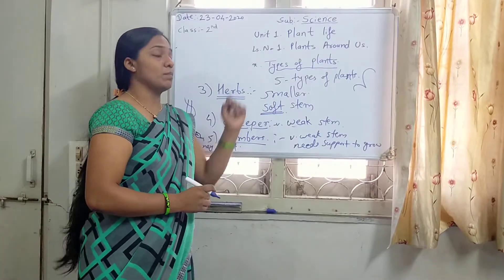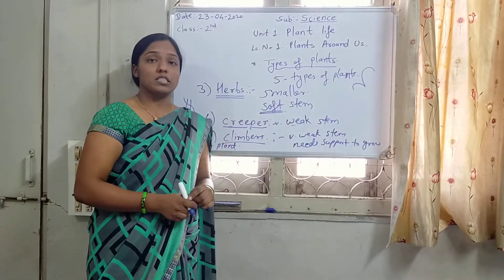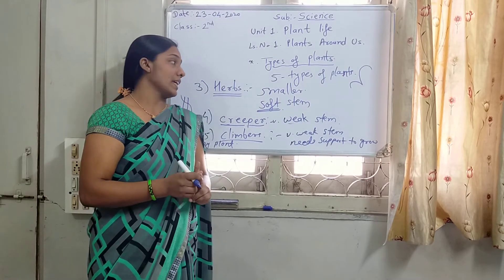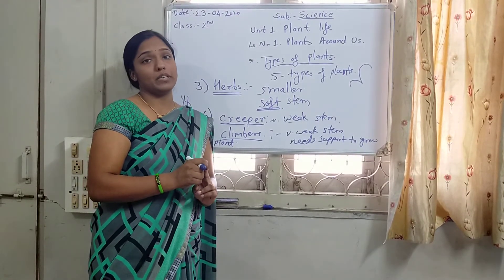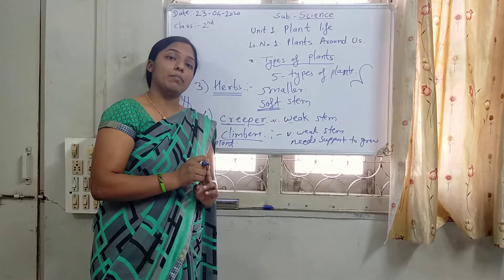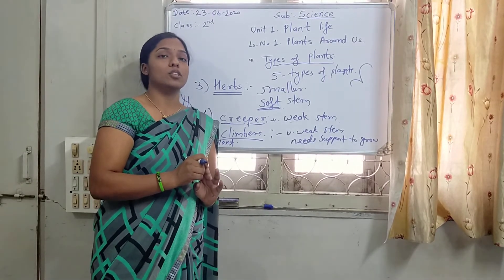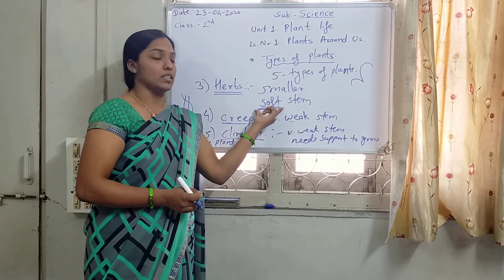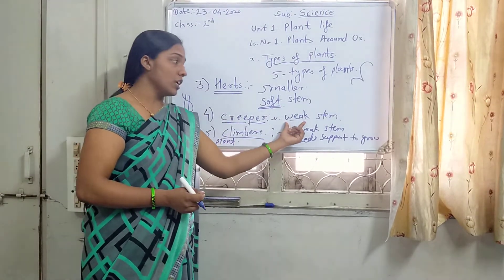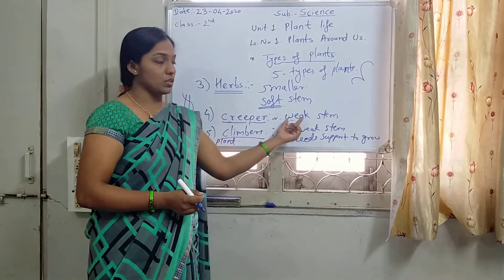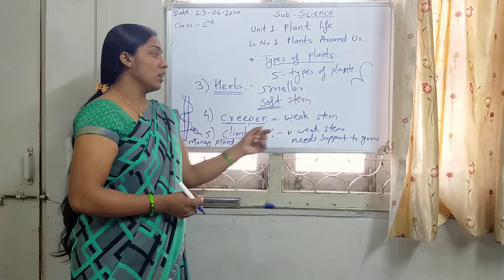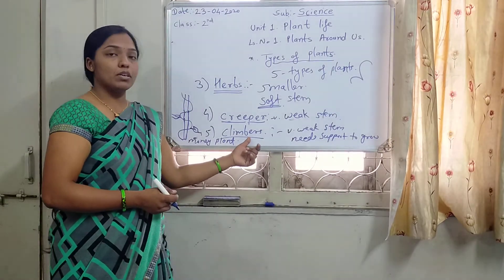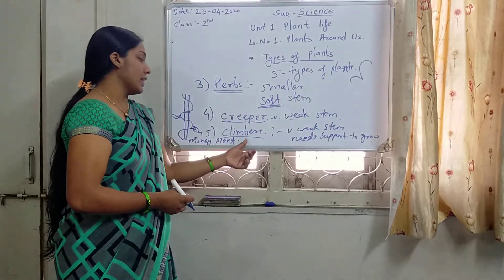So students, these are the 5 types of plants. First is Tree, which has a tall and strong stem — example is Neem, Coconut. Second type is Shrubs, which are comparatively less tall, having a stem with more branches — example is Tulsi. Third type is Herbs, which are smaller and have a soft stem — example is Coriander. Fourth is Creeper, which has a weak stem and grows along the ground — example is Pumpkin. Fifth type is Climber, which also has a weak stem and needs support to grow — example is Money Plant.